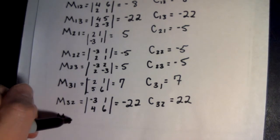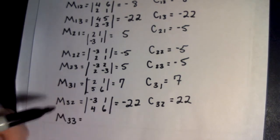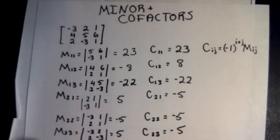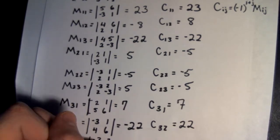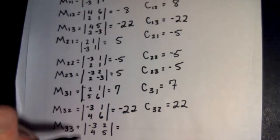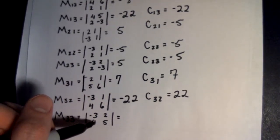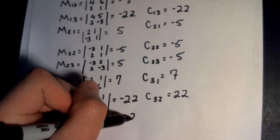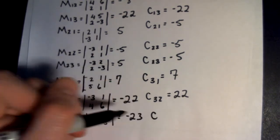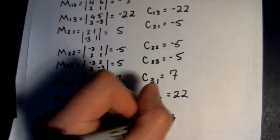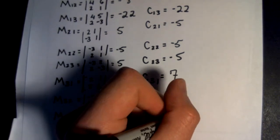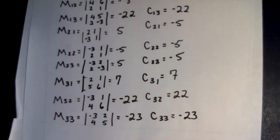Now we look at the minor M33, which is equal to negative 3, 2, 4, and 5. So negative 15 minus 8 is going to be negative 23. The cofactor C33 is not going to change because it's an even number — 3 plus 3 is 6 — therefore 1 times negative 23 is negative 23.